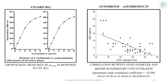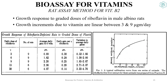The standard curve plots maximum growth, measured in terms of optical density at 595 nm, against different concentrations of vitamins on the x-axis. In this way, you can find the unknown concentration of a vitamin in your sample by measuring the optical density corresponding to the growth of the microorganism. One such bioassay for vitamins is the rat assay, used for vitamin B2.